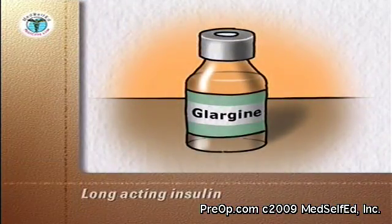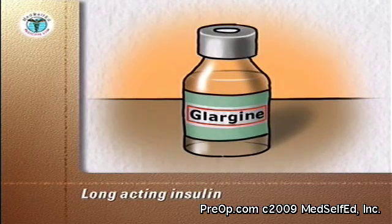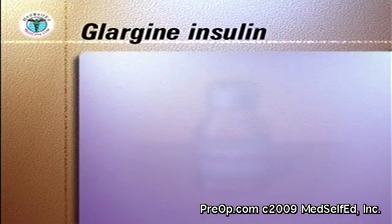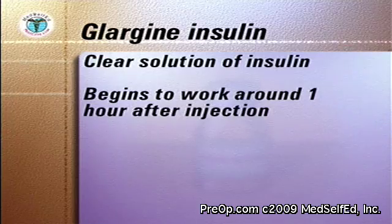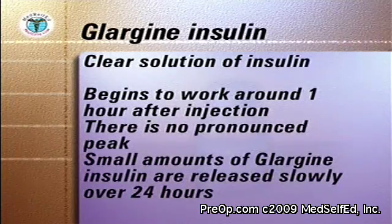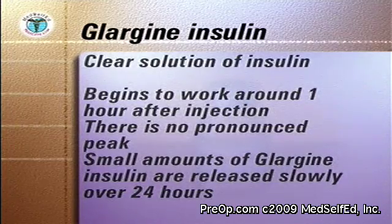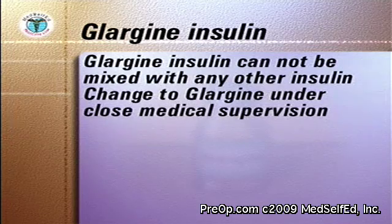Another long-acting insulin is called glargine insulin. It is an insulin analog manufactured by recombinant DNA technology. Unlike other long-acting insulins, glargine insulin is a clear solution. It begins to work about 1 hour after injection and there is no pronounced peak. Small amounts of glargine insulin are released slowly to provide a relatively constant amount of insulin in the body over 24 hours. Glargine insulin cannot be mixed with any other insulin. A change to glargine from NPH, Lente, or Ultralente insulins should be done under the close supervision of your medical team.